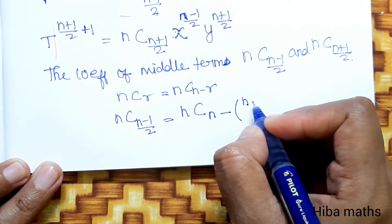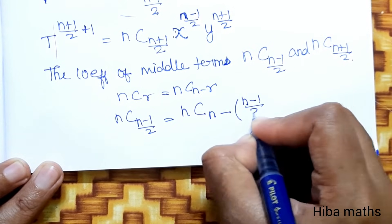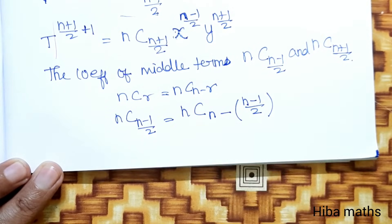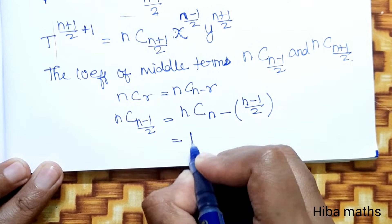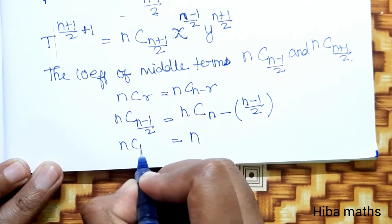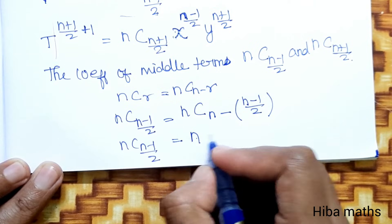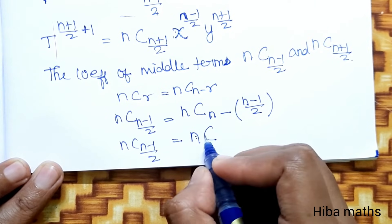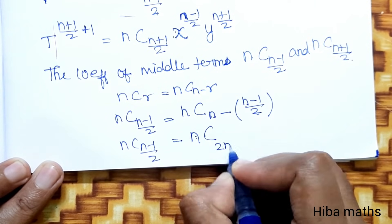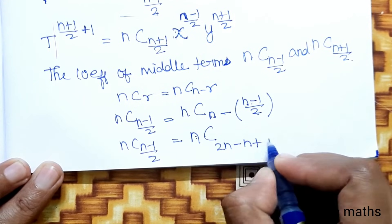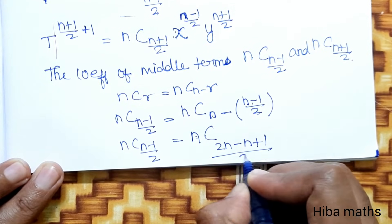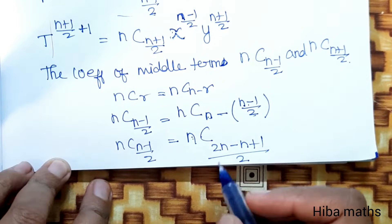This r value is (n-1)/2. Now we solve: nC((n-1)/2) = nC(n - (n-1)/2). That equals nC((2n - (n-1))/2) = nC((2n - n + 1)/2). Next line: 2n minus n gives n.